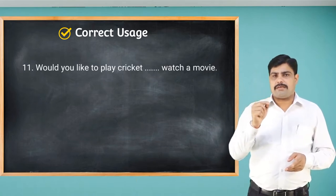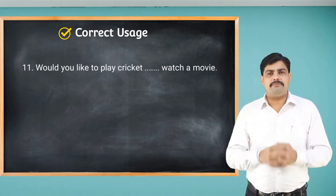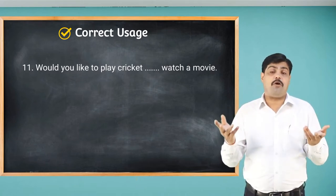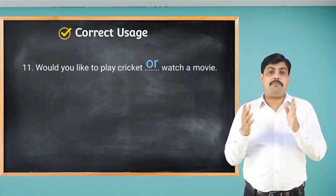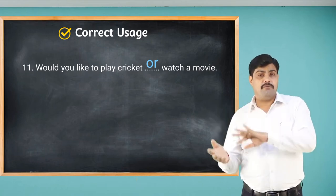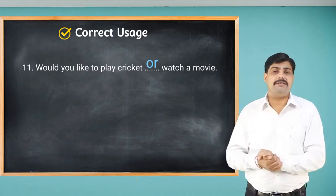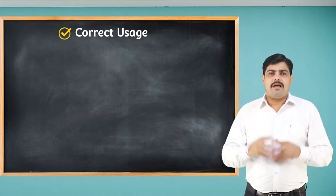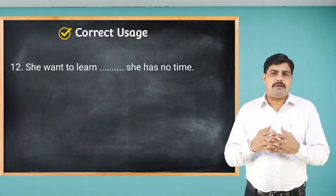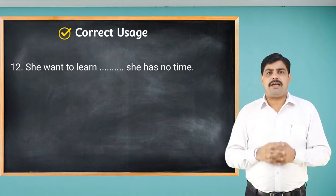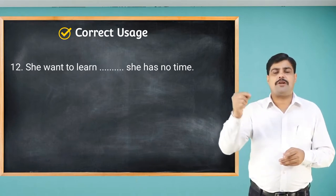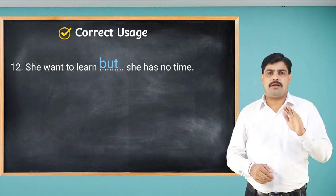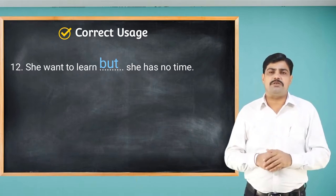'Would you like to play cricket ___ watch a movie' — choice, so use 'or': 'Would you like to play cricket or watch a movie.' 'She wants to learn ___ she has no time' — contrast, so use 'but': 'She wants to learn but she has no time.'